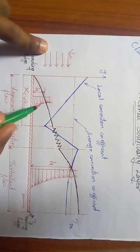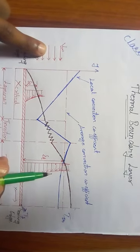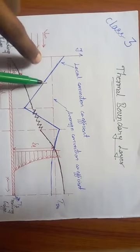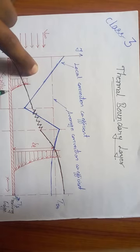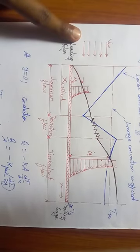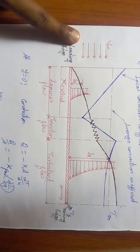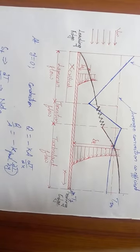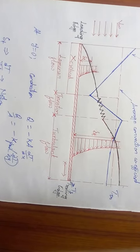Temperature is maximum at the surface and goes on decreasing. There is one particular layer that reaches thermal equilibrium with the surrounding temperature T_infinity. Between the topmost and bottom layers there is a temperature difference, causing heat to flow—this is convection. This flow of heat is governed by Newton's law of cooling: q = h·A·(Ts - T∞).